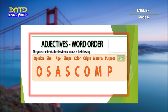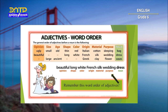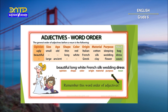Let's look at an example describing a bag and dress. It is an ugly, small, old, thin, red, Italian, cotton sleeping bag. It is not common to have so many adjectives before a noun, but this shows the correct order of adjectives. Ugly is an opinion. Small is a size. Old refers to age. Thin refers to shape. Red is a color. Italian refers to its origin. Cotton refers to the material the bag is made of. Sleeping is the purpose of the bag.